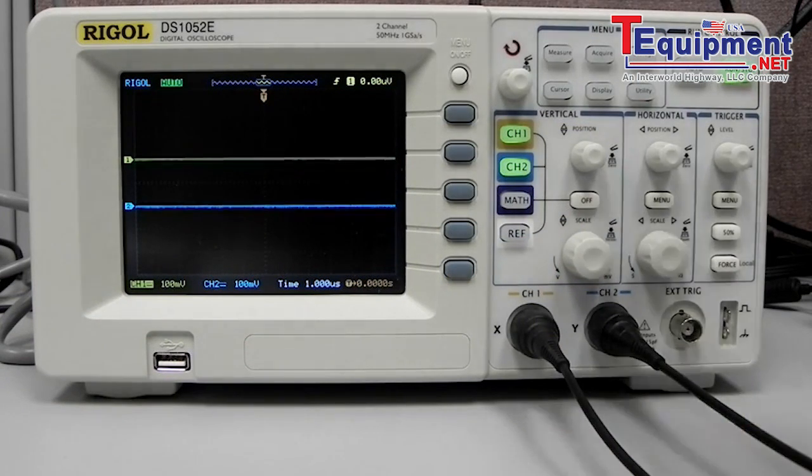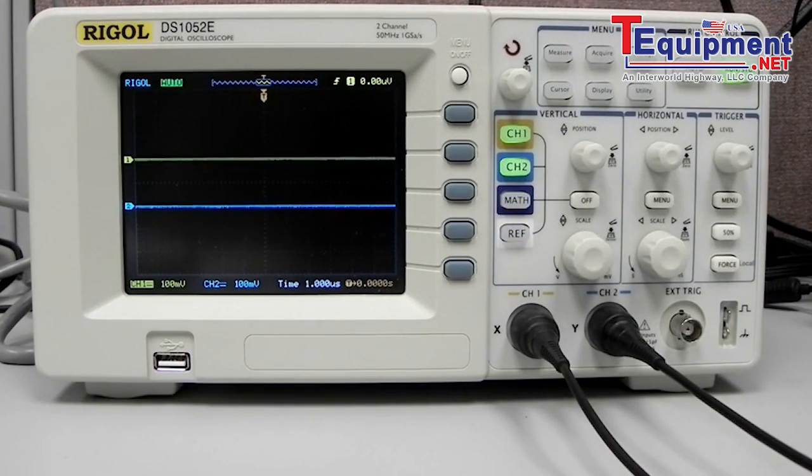Today we're going to walk around some of the features of the DS-1000 series of Rigol oscilloscopes. In this particular case we have the 1052E which is a two channel 50 megahertz one giga sample per second digital oscilloscope.